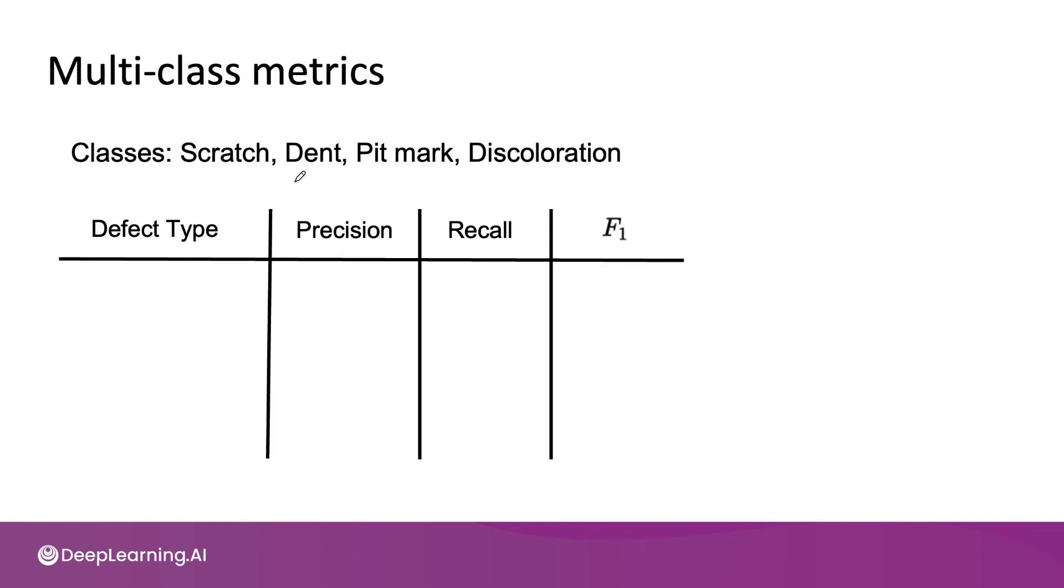One way to evaluate how your algorithm is doing on all four of these defects, each of which can be quite rare, would be to look at precision and recall of each of these four types of defects individually. In this example, the learning algorithm has 82.1% precision on finding scratches and 99.2% recall.